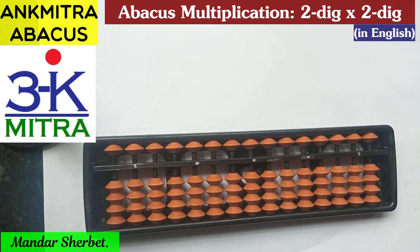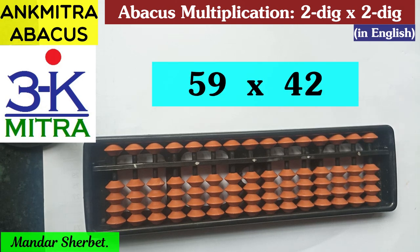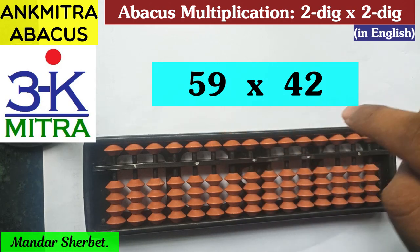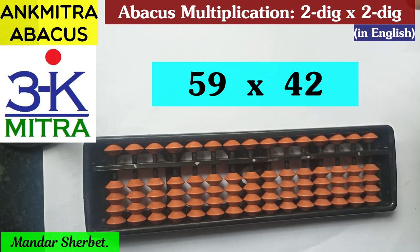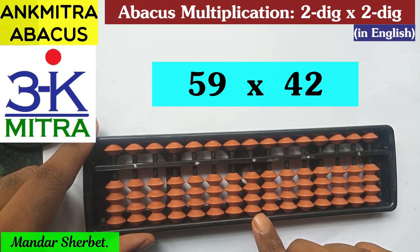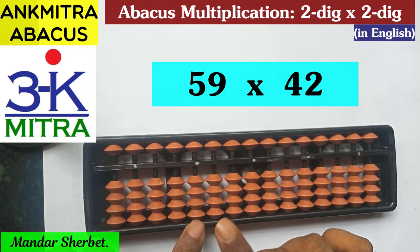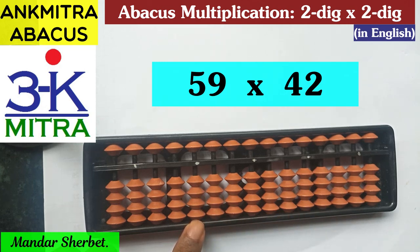Let's focus on the first sum: 59 multiplied by 42. In any multiplication, what we need to think of first is to find out from which rod we'll start our calculation. Here we have two-digit multiplied by two-digit, so there are a total of four digits. We'll start our calculation from the fourth rod — the units place is the first rod, then second, third, fourth. The next white dot will be our fourth rod, and we'll start by considering the tens place digit of 42 first.